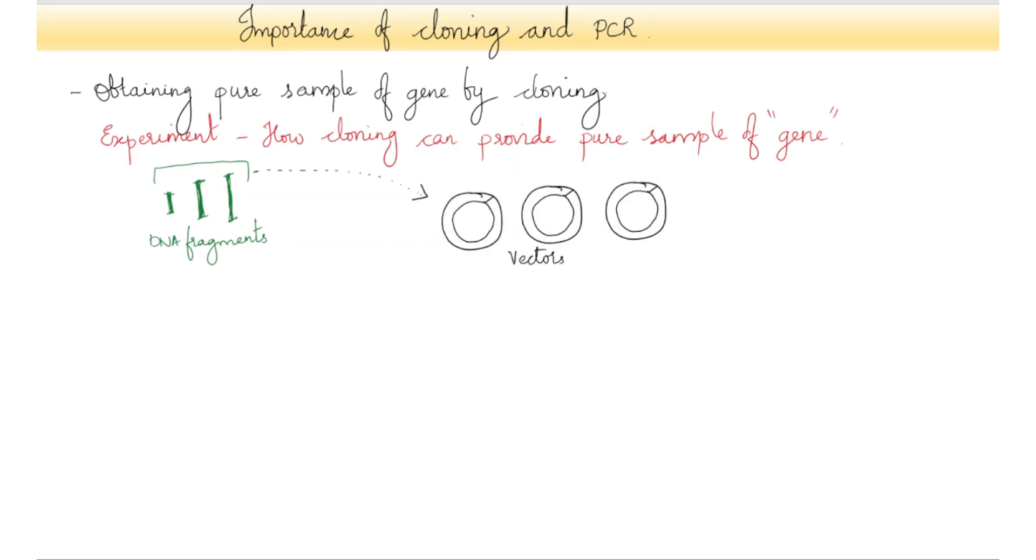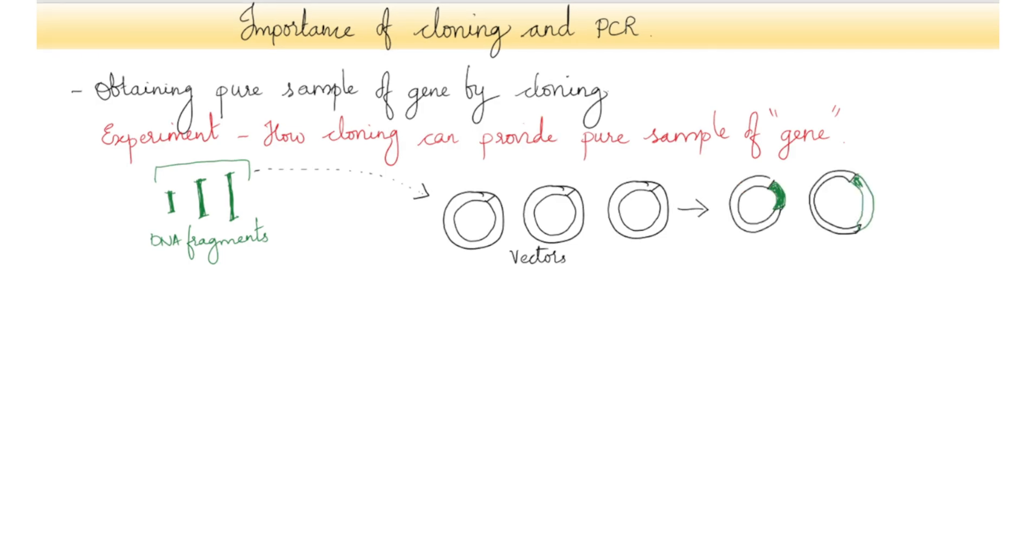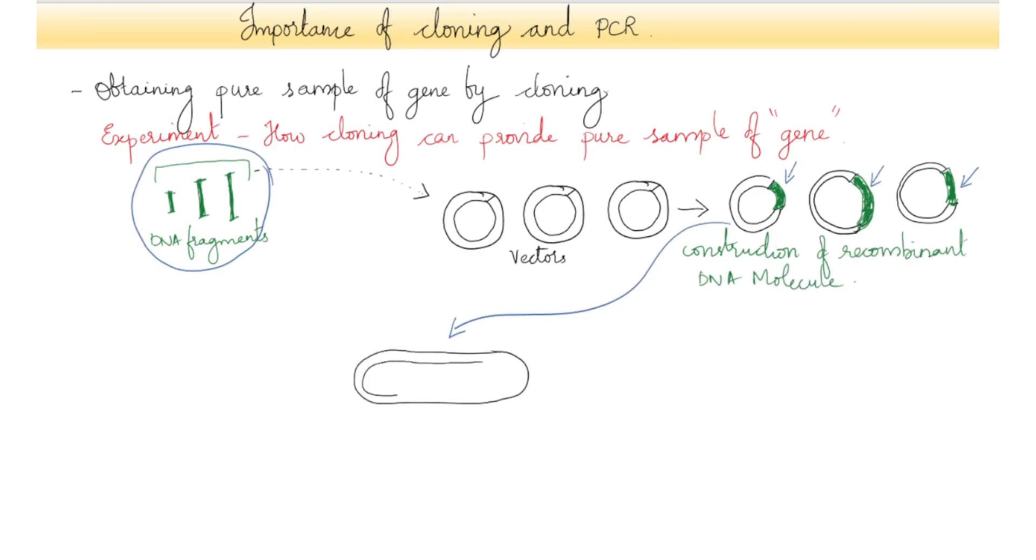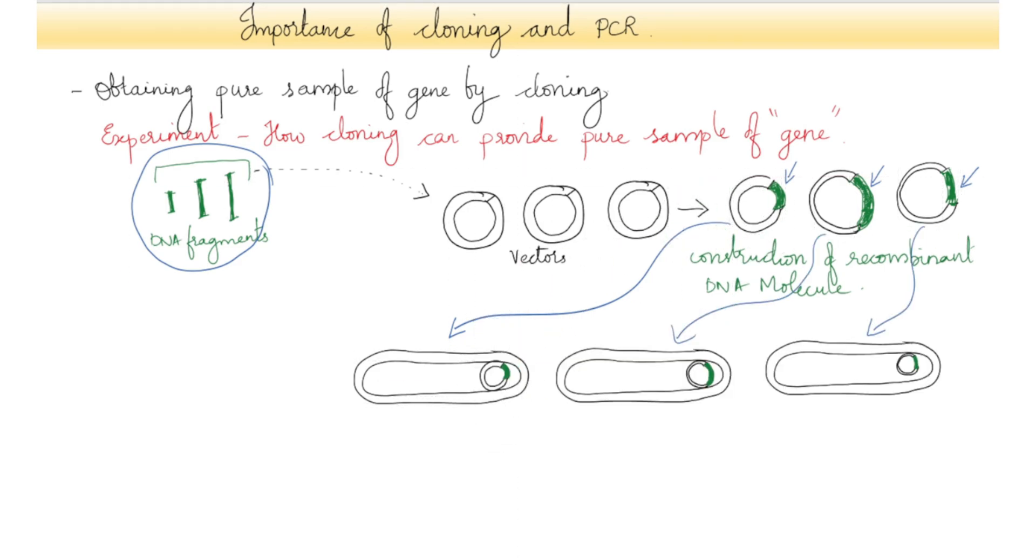Each of these fragments becomes inserted into a different vector molecule to produce a family of recombinant DNA molecules, one of which carries the gene of interest. Usually only one recombinant DNA molecule is transported into any single host cell.